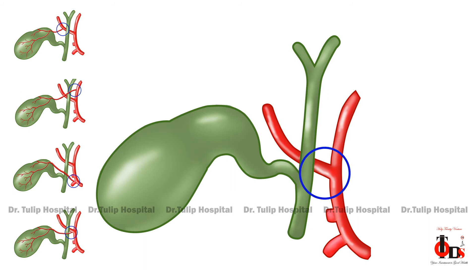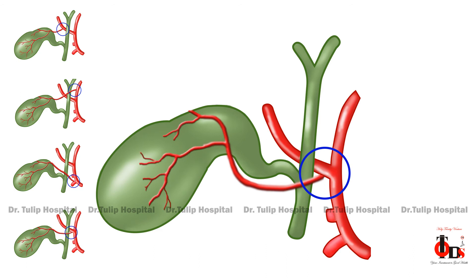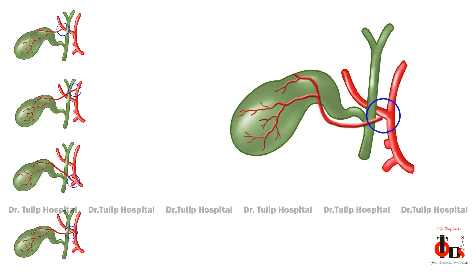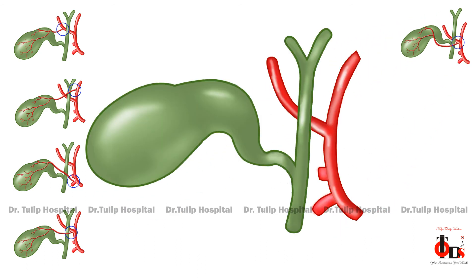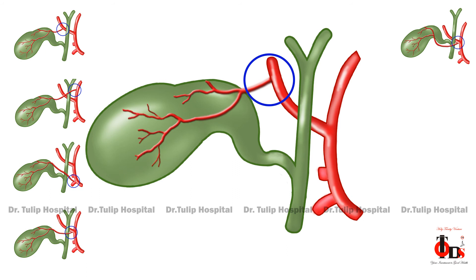The cystic artery can also arise from the hepatic artery and come anterior to the cystic duct and reach the gallbladder. Additionally, it can originate very high, close to the liver, and then reach out to the gallbladder.